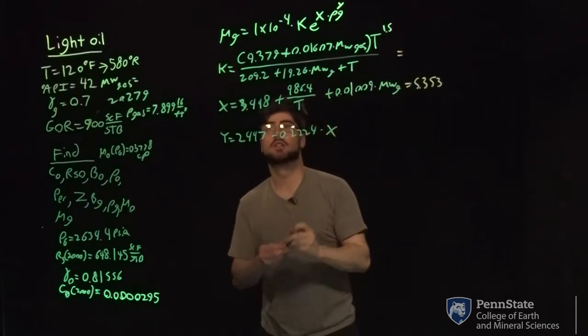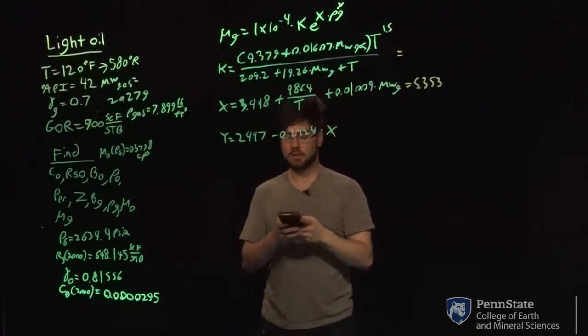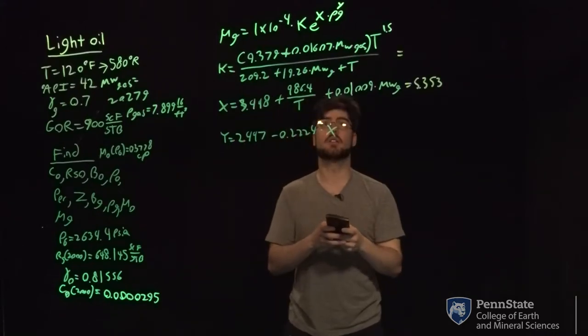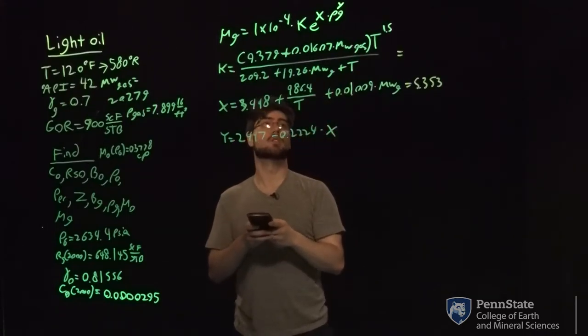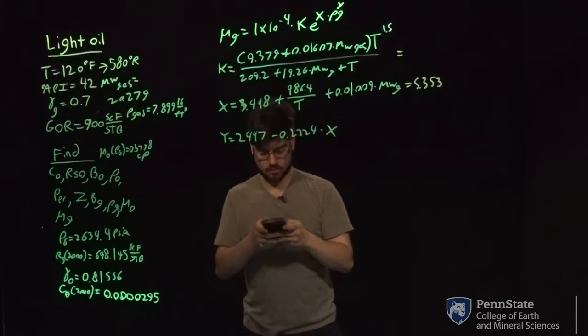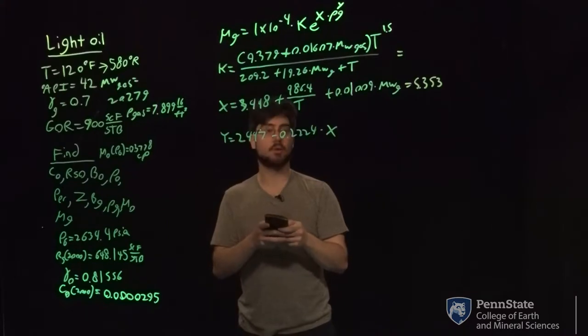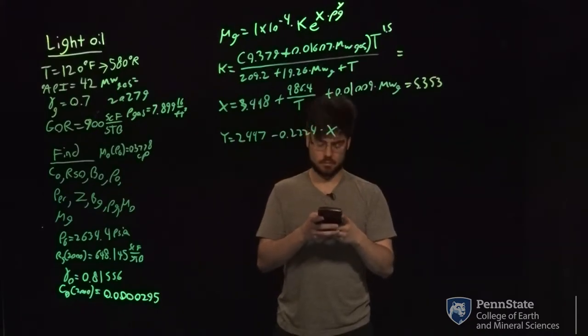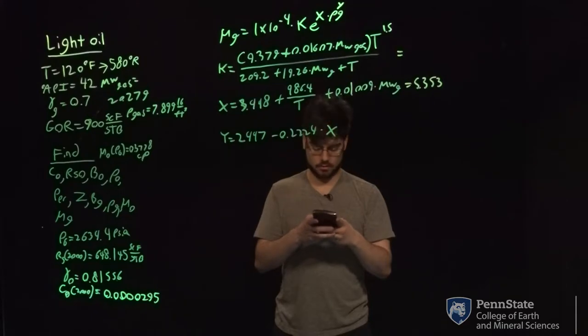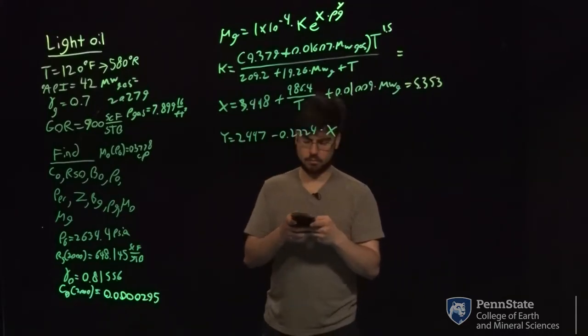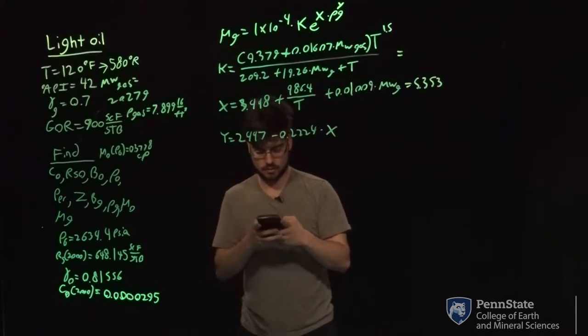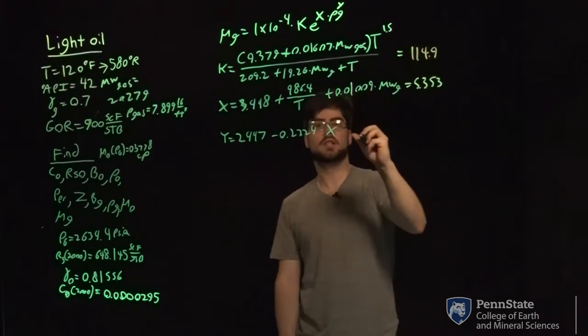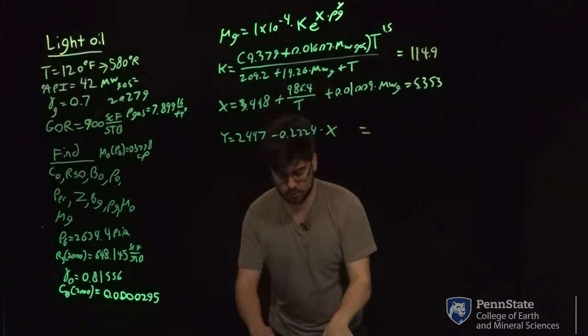So k next. k equals 9.379 plus 0.01607 times 20.279 all times 580 to the 1.5 power divided by 209.2 plus 19.26. So k equals 114.9 and then y will just equal by plugging in x what we already found.